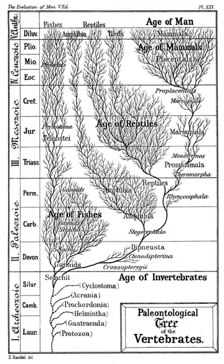Evidence for Evolution. Scientific evidence for evolution comes from many aspects of biology and includes fossils, homologous structures, and molecular similarities between species' DNA.